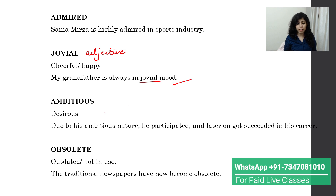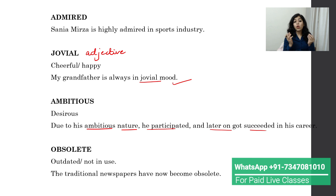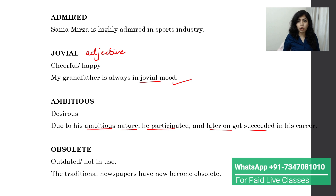Next is 'ambitious,' meaning desirous — a person who has the desire to achieve something. For example: 'Due to his ambitious nature, he participated and later got succeeded in his career.' Then we have 'obsolete,' which means outdated or not in use. For example: 'The traditional newspapers have now become obsolete.' This word can also be easily used in writing tasks.